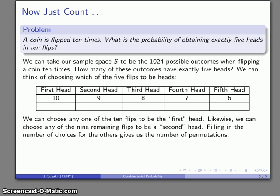However, this is a permutation, which means that whichever I pick first, second, third, fourth, and fifth, I'm going to treat it as a distinct choice, even if I choose the same flips, but in a different order.